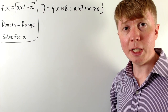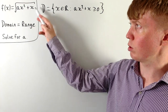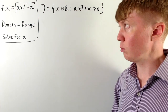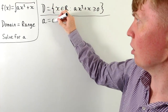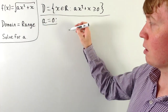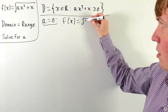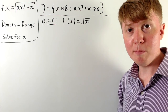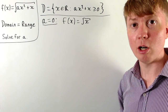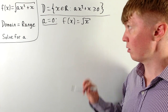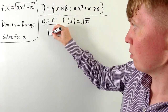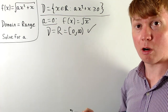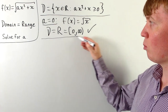We might get quite different behaviour depending on the sign of a. We'll start with the simple case where a equals zero — we don't have a quadratic inside the square root, we've just got the square root of x. Here the domain and range are both just all of the non-negative real numbers, the interval from zero up to infinity. So a equals zero works and gives our first solution.